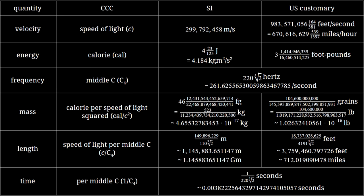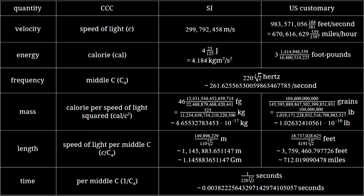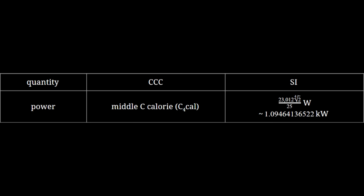Anyway, now we can do some fun stuff. Let's pick a bunch of quantities and derive some units for them. I think the easiest one to start with is the unit of power, which means power. Power is equal to energy over time, which means it's equal to energy times frequency. So in the CCC system, power is naturally measured in middle C calories. One middle C calorie is about 1.1 kilowatts, or one and a half horsepower. I think this is the first derived unit in the CCC system that's actually a convenient size, probably just because this definition doesn't involve the speed of light anywhere.